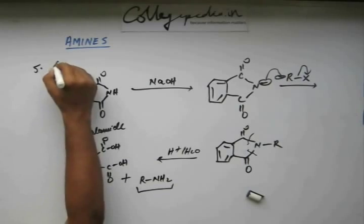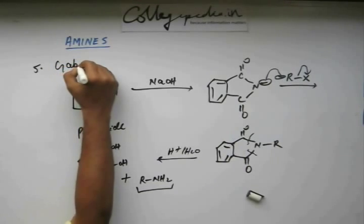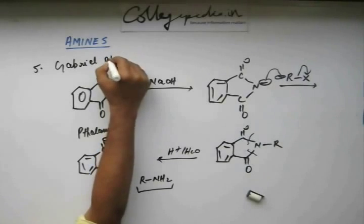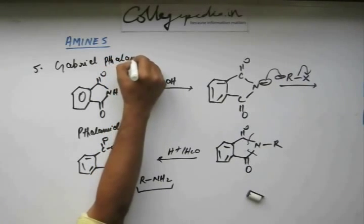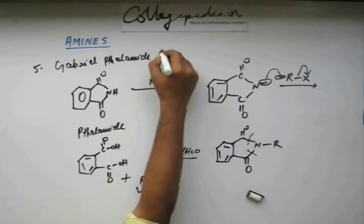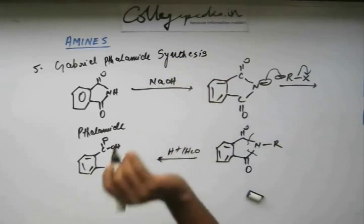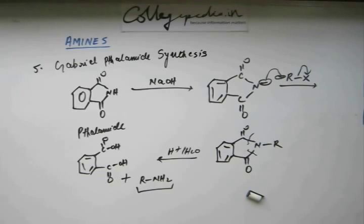So name of this reaction is Gabriel phthalimide synthesis. You should know this name because they can ask for this name. It's an important reaction. It's Gabriel phthalimide synthesis, and that's how you synthesize this 1° amine.